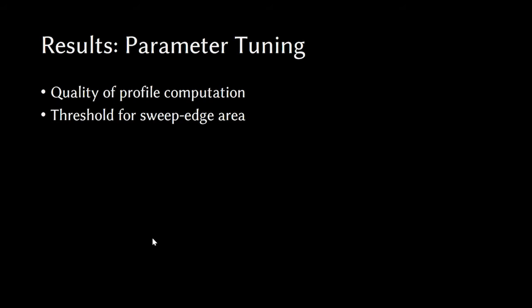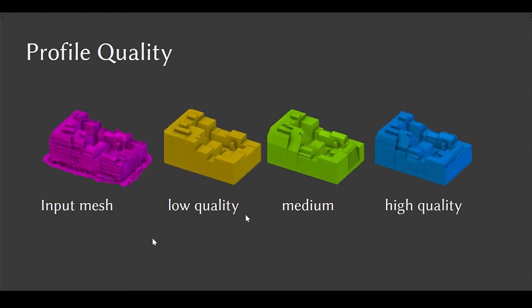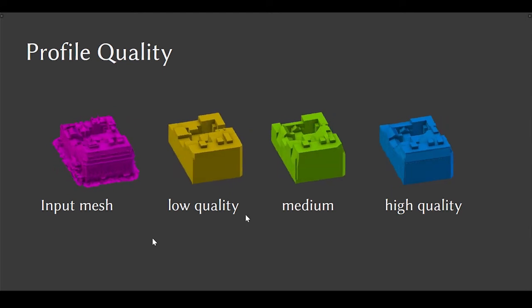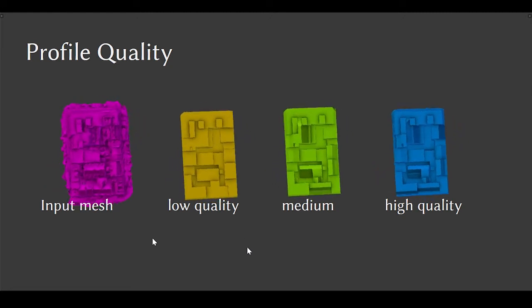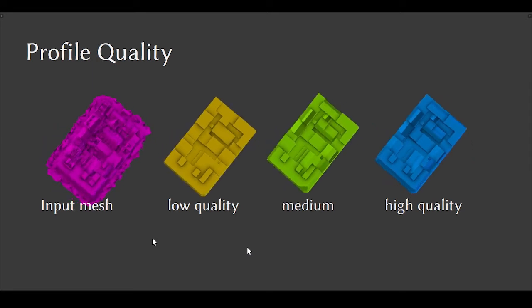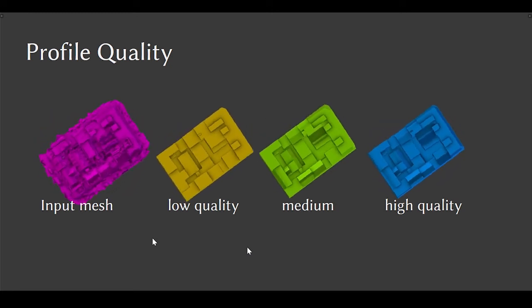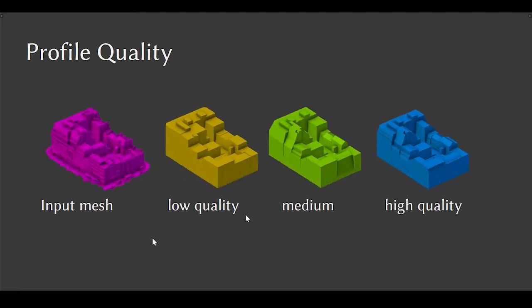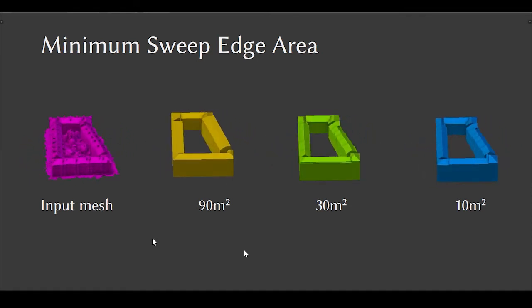At this point, we can look at some of the different parameters that have an effect before looking at the results. One advantage of our system is that we're able to keep the same footprints layout but vary the quality of the profiles. This allows us to change the number of polygons in the model very easily. We can see an input mesh on the left in pink and in yellow, green and blue, we can see the effect of changing the quality of the profiles used.